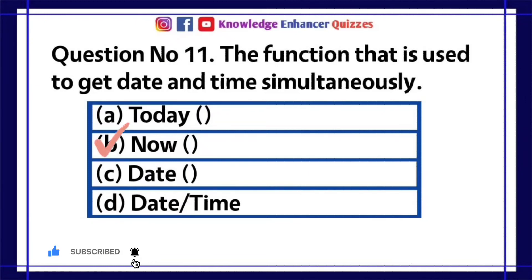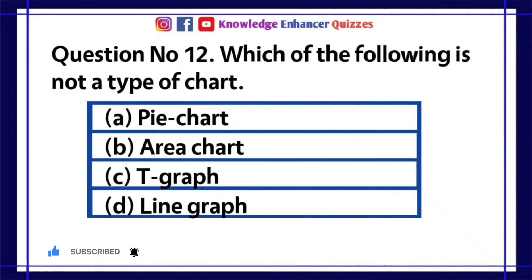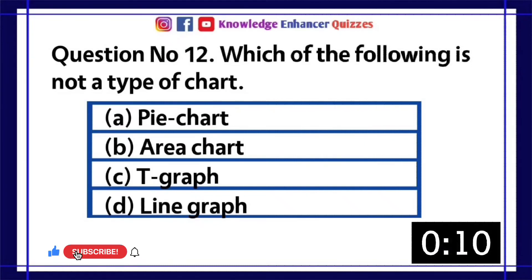Option B is the right answer. Question number 12: Which of the following is not a type of chart? A. Pie chart, B. Area chart, C. T-Graph, D. Line graph.